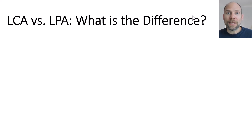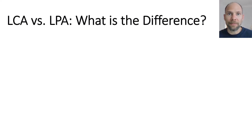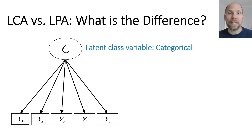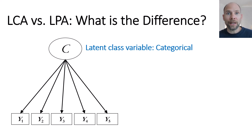In this video I want to address the question of what the difference is between latent class analysis and latent profile analysis. First of all, these two methods have one thing in common: they are both latent variable models or latent variable statistical methods. We can illustrate these with path diagrams, as you may be familiar with from factor analysis. The key distinction is that here the latent variable C is a categorical latent variable — it is discrete, and its values are the latent classes. Both latent class and latent profile analysis share that assumption.